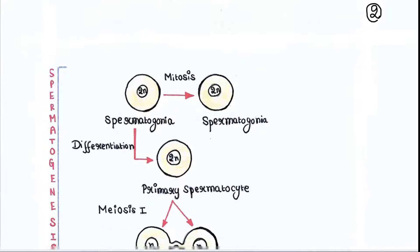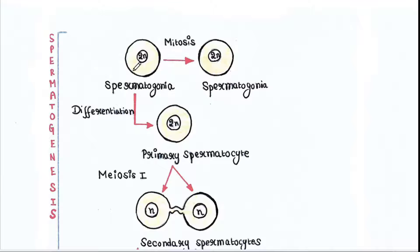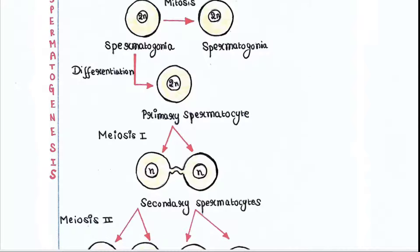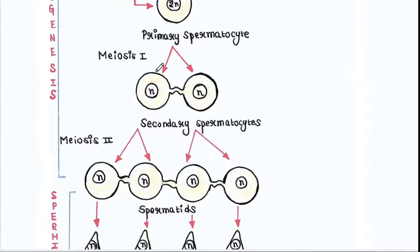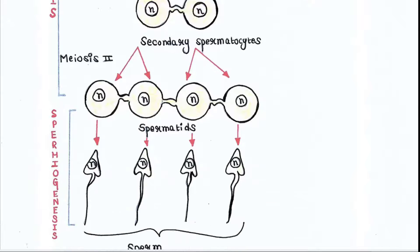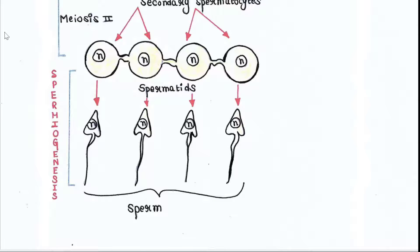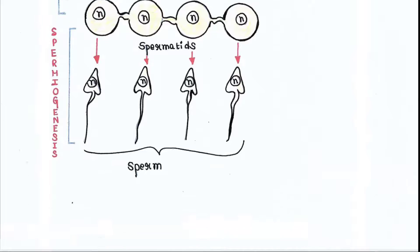This scheme you will see here. Spermatogonia are there, some of them are continuing mitosis and producing same spermatogonia. Some of them are now called primary spermatocytes. They are undergoing meiosis. After first meiosis, two secondary spermatocytes are formed. After meiosis two, four spermatids are formed. Spermatids are now getting developed into sperm, and this process of production of sperm from spermatids is called spermiogenesis. So this is the process.